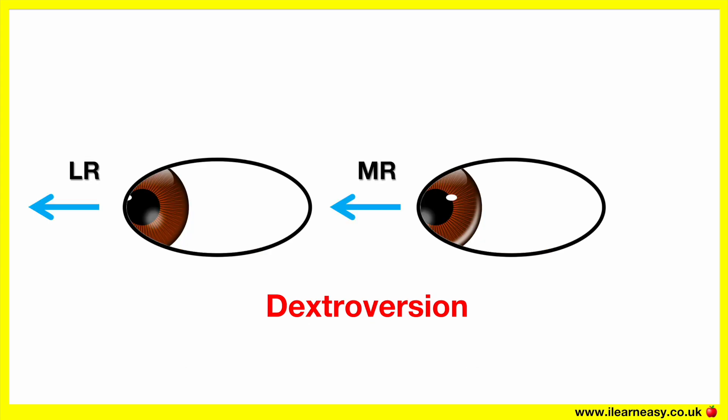Dextroversion — this is when you ask the patient to look right. This position assesses the function of the right lateral rectus and left medial rectus.